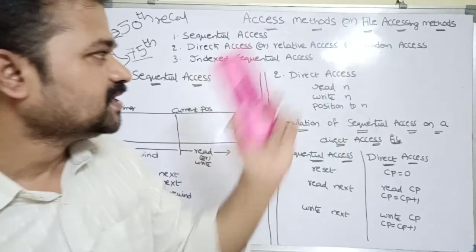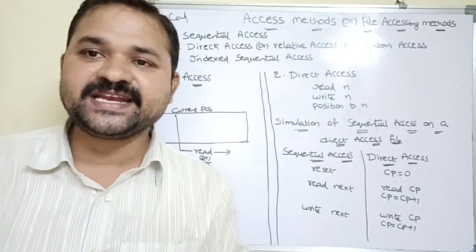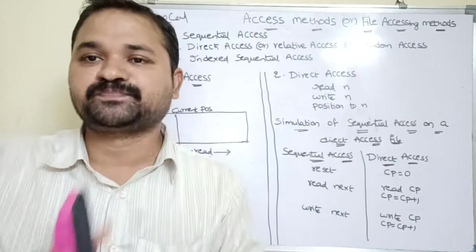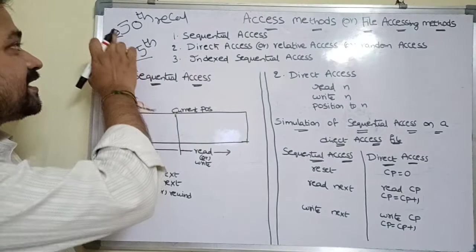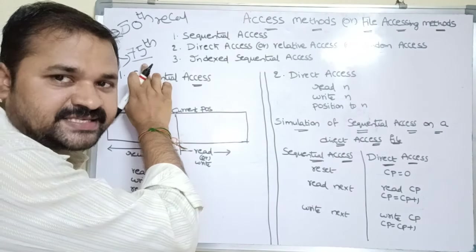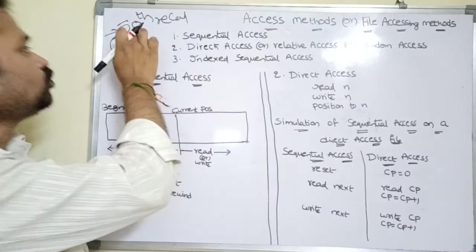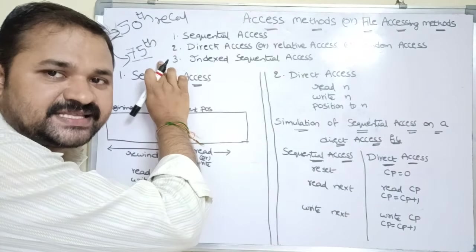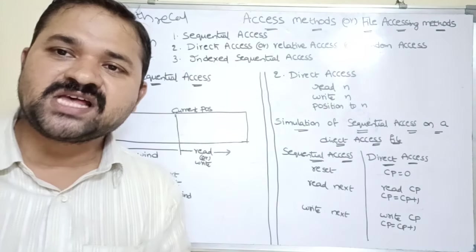The second technique is direct access, also called relative access or random access. Using this technique, we can access any record directly. For example, if our file contains 100 records and we are currently at the 50th record and want to access the 75th record, we can go directly from the 50th record to the 75th record and access it immediately.